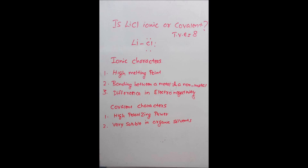It has some covalent characters too. The first one is high polarizing power. Since lithium is a very small atom, when it loses an electron, it becomes electropositive like other alkali metals. After it loses an electron, it has only one shell, and the charge of the nucleus penetrates through that shell and pulls the opposite charge — here, chlorine. So lithium is positively charged and it pulls the electron cloud of chlorine even more easily compared to other alkali metals because of its small size.